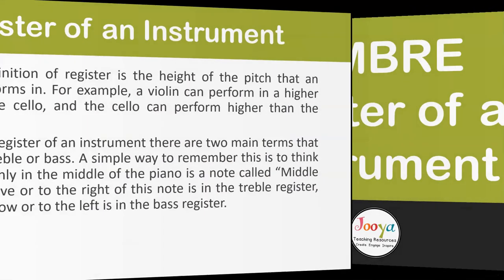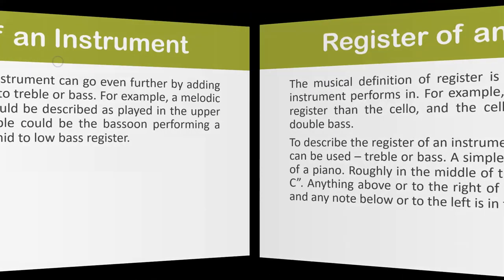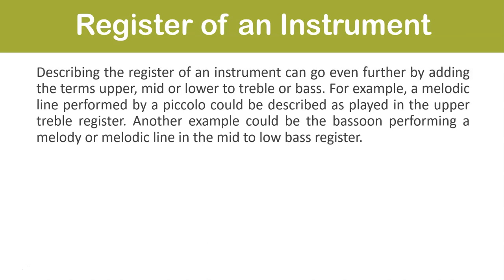The register of an instrument is the height of the pitch that the instrument performs in. For example, a violin can perform in a higher register than the cello, and the cello higher than the double bass. To describe register there are two main terms: treble or bass. A simple way to remember this is to think of a piano — anything above middle C is in the treble register, and anything below is in the bass register. You can go further by adding the terms upper, mid, or lower — for example, a piccolo melody could be described as being played in the upper treble register, or a bassoon in the mid to low bass register.